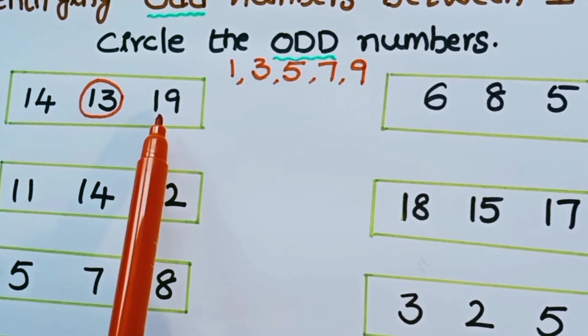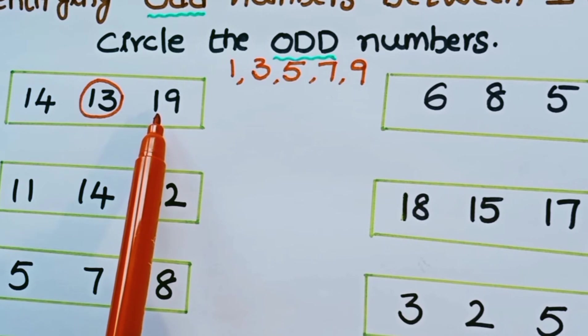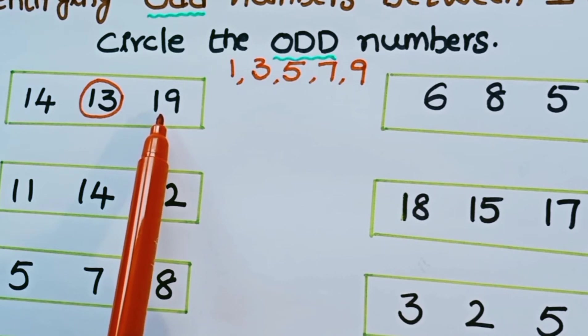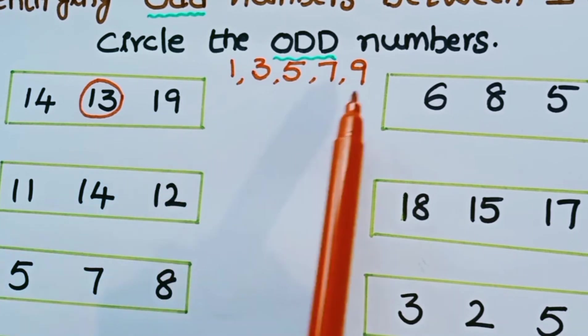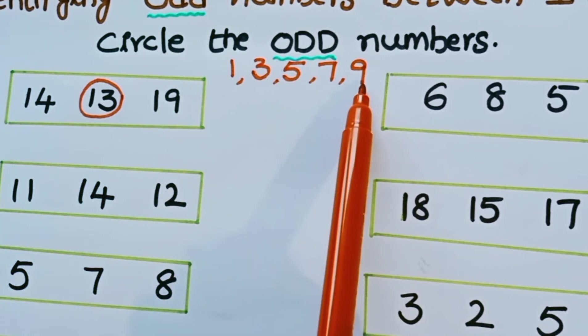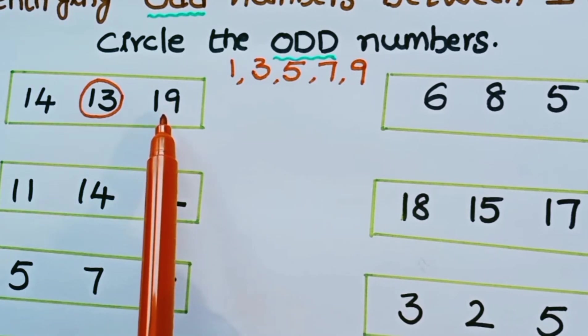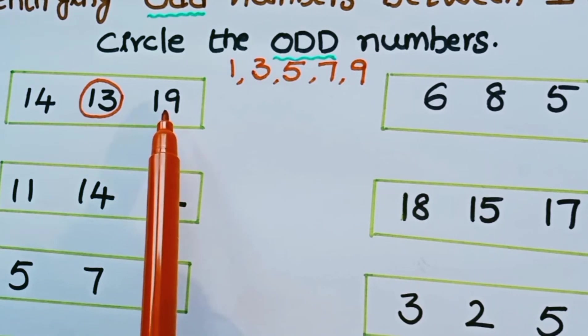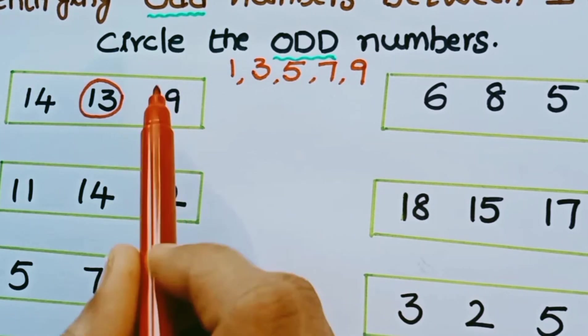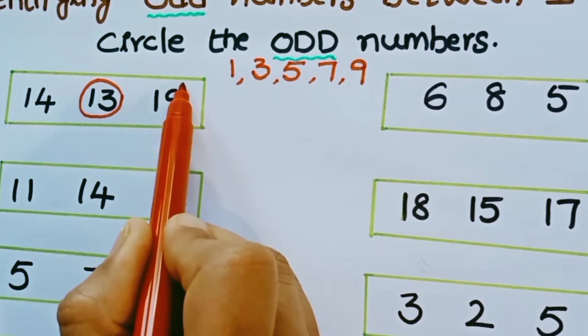Is 19 an odd number or even number? 19 is ending with 9, and 9 is an odd number. So 19 is also an odd number. Circle 19.